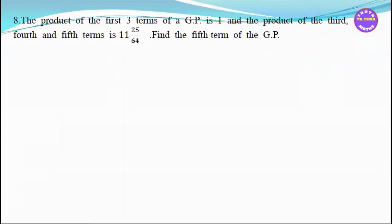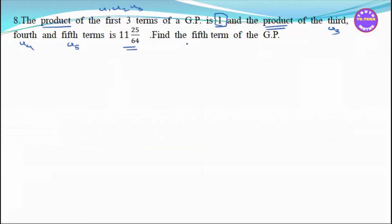Number eight. The product of the first three terms is U1 × U2 × U3. The product of the third, fourth and fifth terms is U3 × U4 × U5.